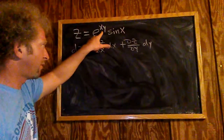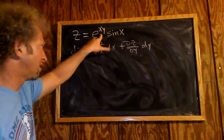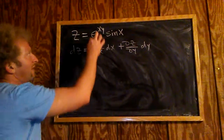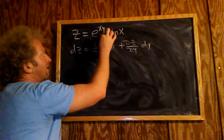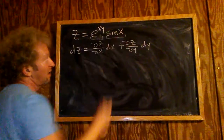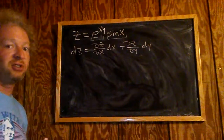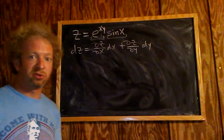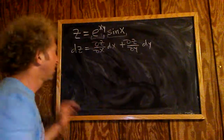The hard part is going to be ∂z/∂x, because we have a function of x here and a function of x here, so we actually have to use the product rule to do this derivative.